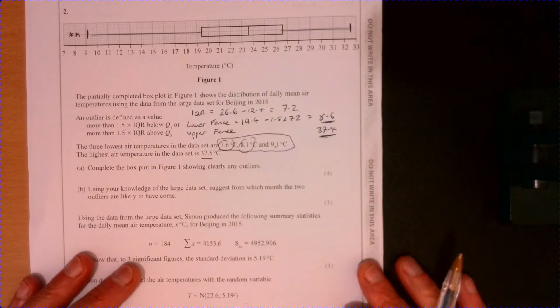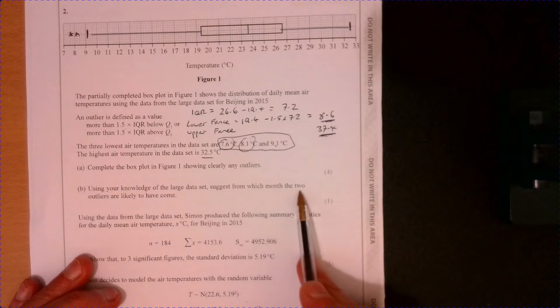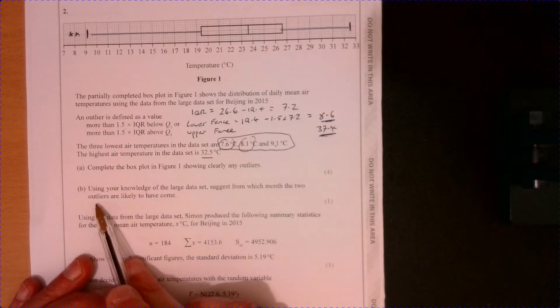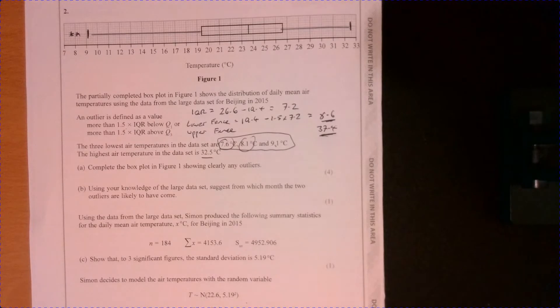Right, let's have a look at part B. Using your knowledge of the large data set suggests from which month the two outliers are likely to have come. Well, you need to have some knowledge of the data set.